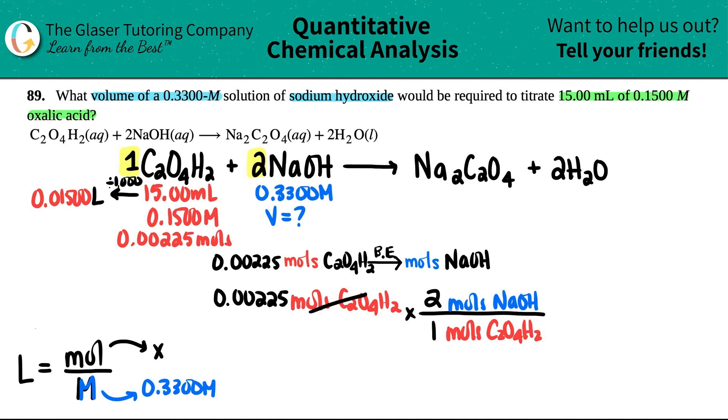So basically, you're just timesing it by two. So I got that number times two. So I get 0.0045 moles of NaOH. That's now what this is. So I know what this is now. 0.0045 moles. And now we're ready to do the conversion.